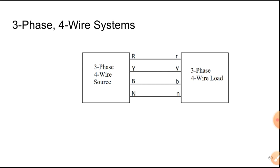Our next topic, which we will discuss in part 2, is the 4-wire system — we are done with the 3-wire system. A 4-wire system is a 3-phase system that has four terminals or four wires, which is why it's called 4-wire. The original 3-wire system has R, Y, and B lines, and the fourth line is called the neutral line. We have a 4-wire source and a 4-wire load. You cannot have a 4-wire load with a 3-wire source; you need to connect them 4-wire to 4-wire.